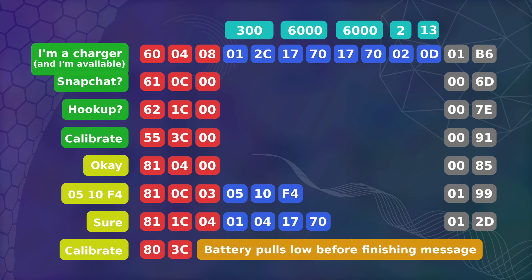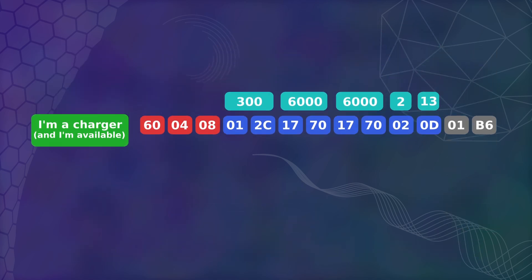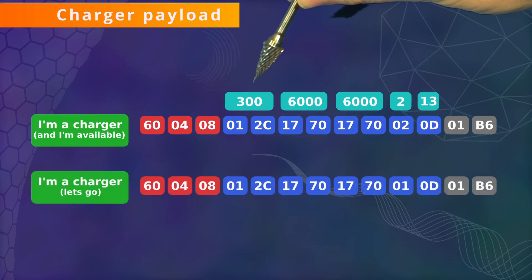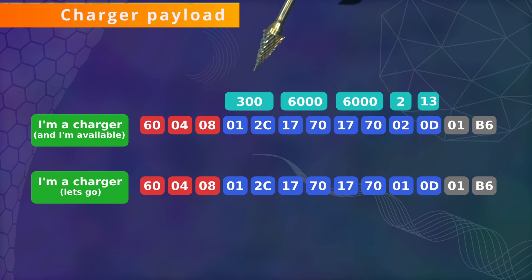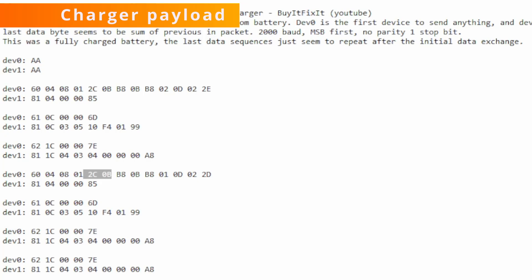The 'I'm a Charger' payload has four numbers that stand out when viewed in decimal. The 300 could be related to the 300 second interrupt, but it could be something completely different. The 6,000 numbers are the milliamp rating of the fast charger. On buy it fix it's data, these bytes are 3,000, which is the rating of the standard charger. So this is almost certainly the charger telling the battery what charging current it is capable of.